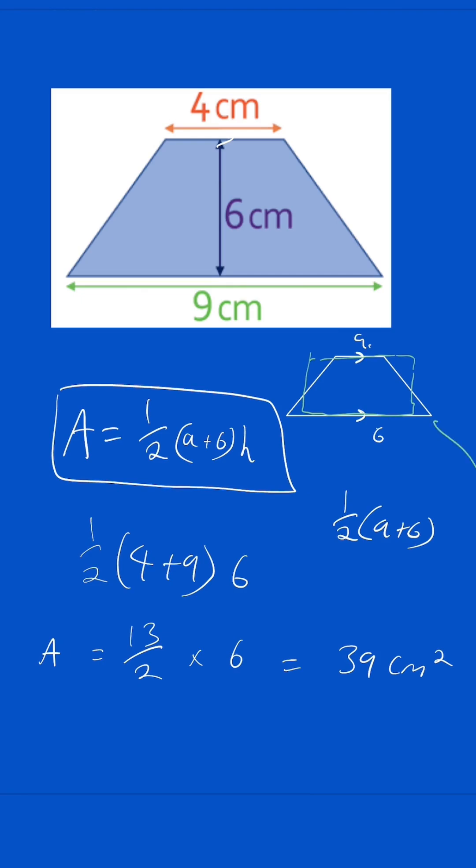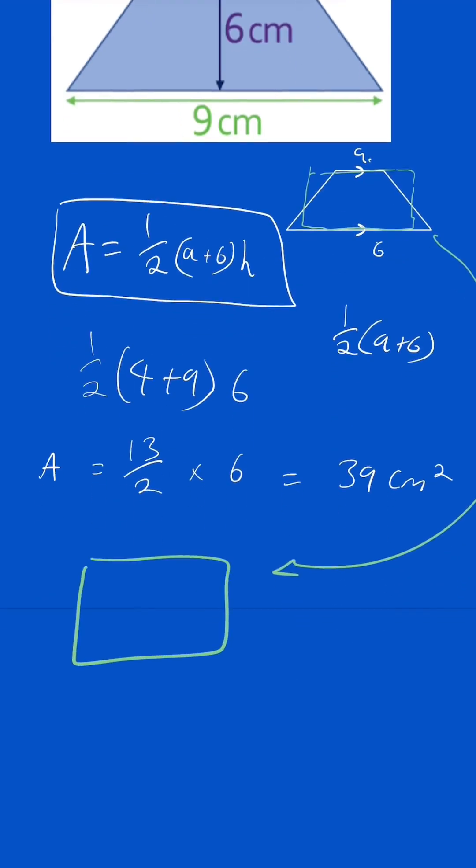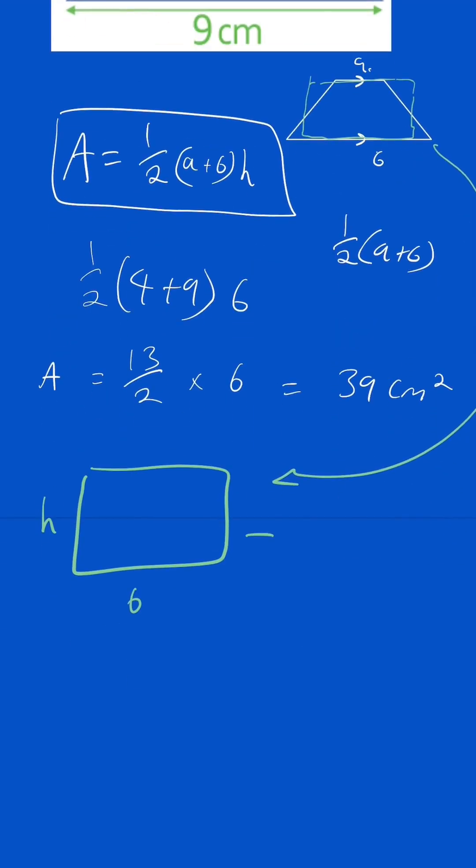So we're turning this question into another question, which is basically base times height. But the base is just a half (a plus b), since you just average those sides.